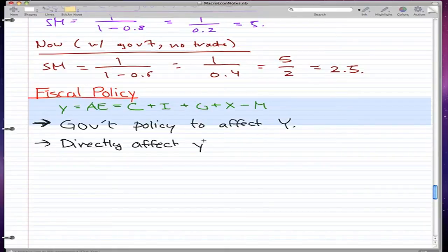The only way that they directly affect Y is through spending. They directly affect Y by spending, and we know the spending is G—that's government spending.